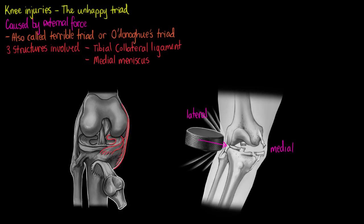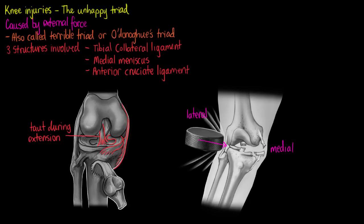The last structure is our anterior cruciate ligament. That's usually included in the injury because upon that external lateral force being applied, the anterior cruciate ligament is quite taut during extension, and usually our leg will be fully extended when we have that force applied. So we've got the anterior cruciate ligament tearing, along with the medial meniscus and the tibial collateral ligament — all three tearing at once, resulting in that injury.